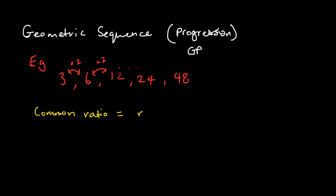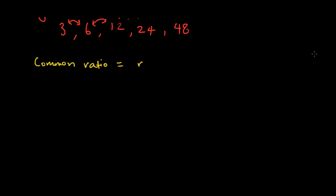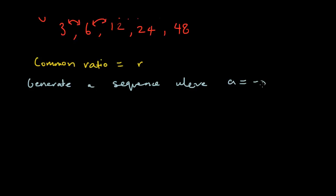What if I said to you: generate a sequence with A equals negative 81 and R equals 1 over 3? As we should remember, A is our starting term from arithmetic progressions, and our ratio R equals 1 over 3. So the first term is negative 81.